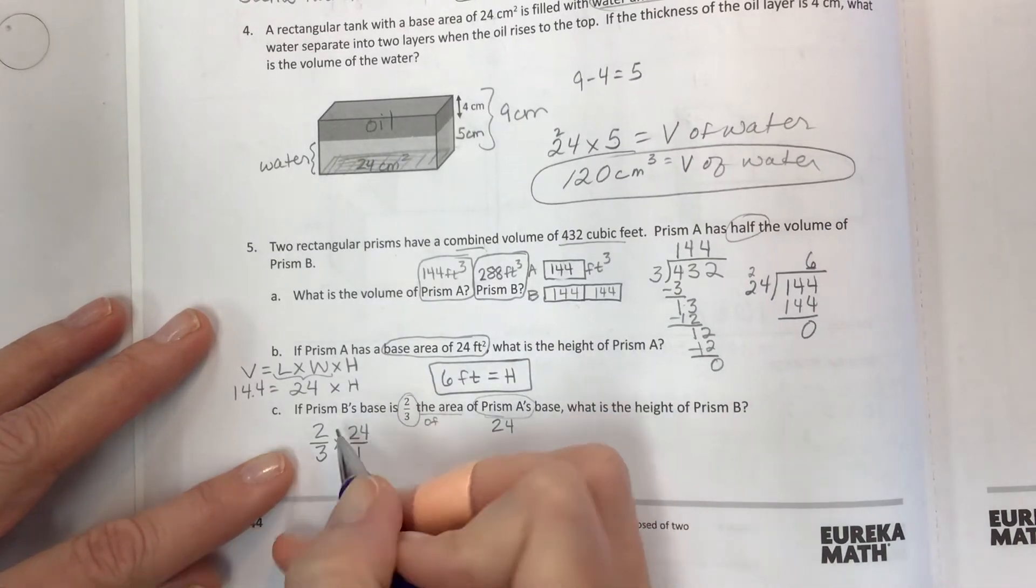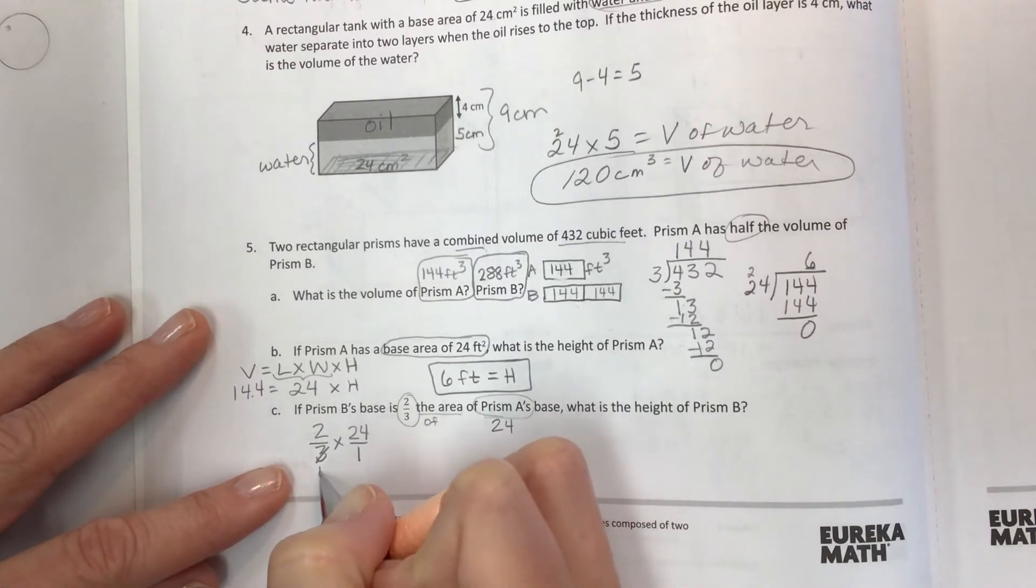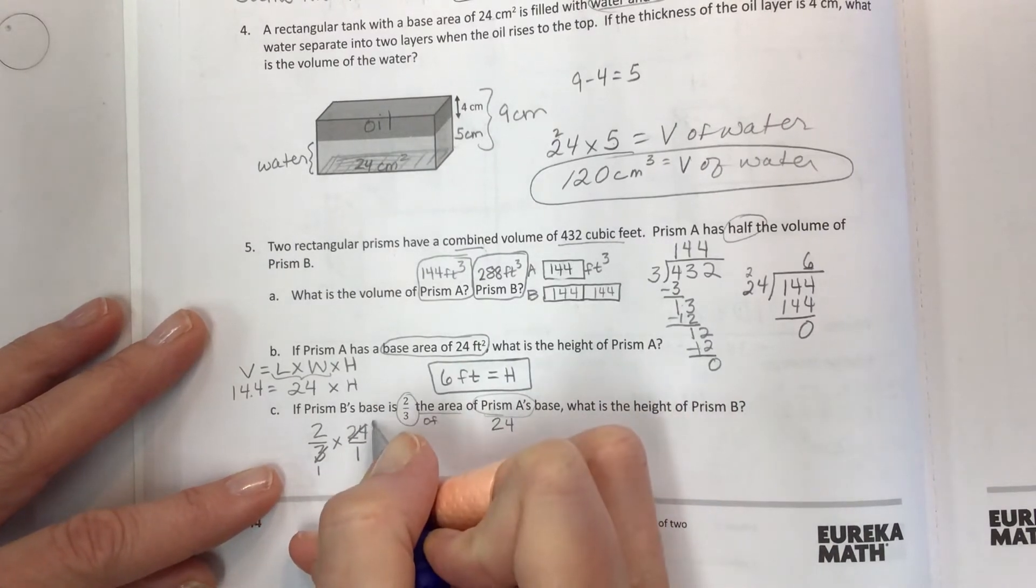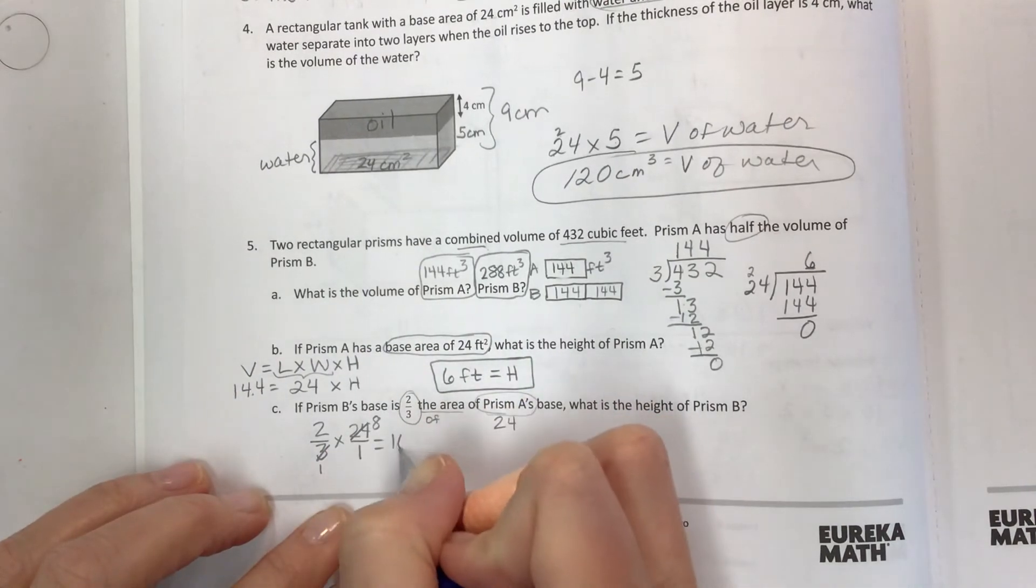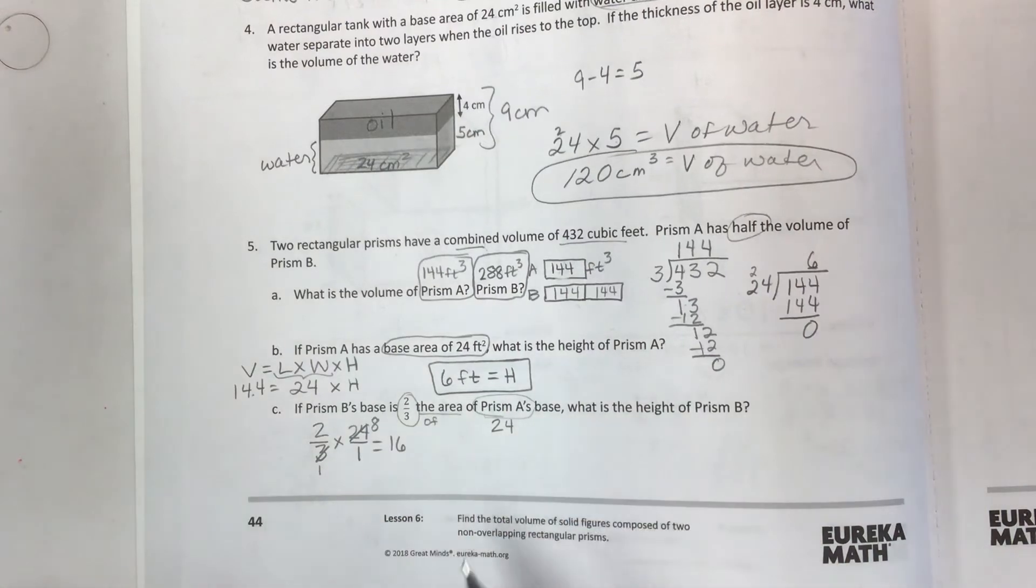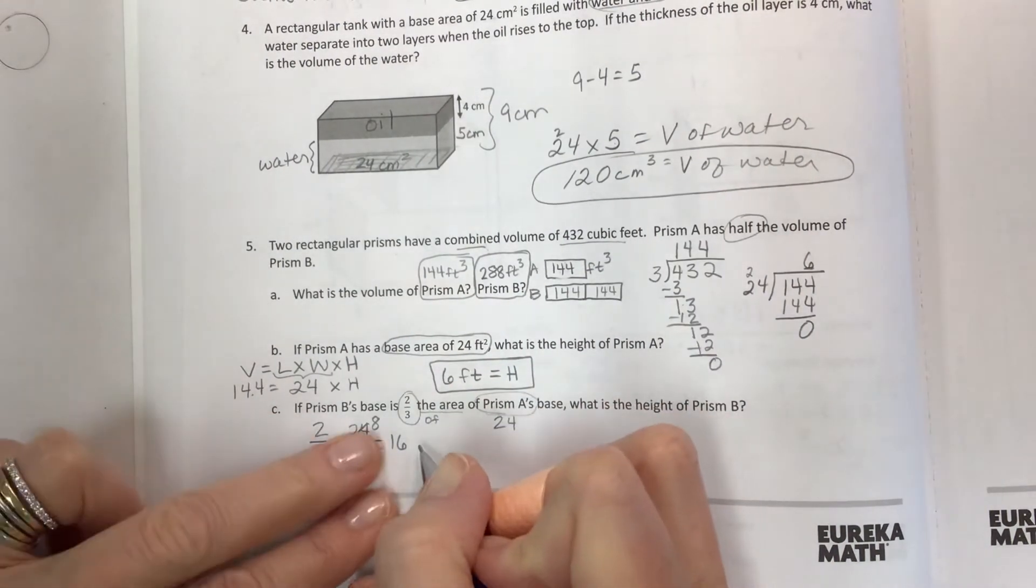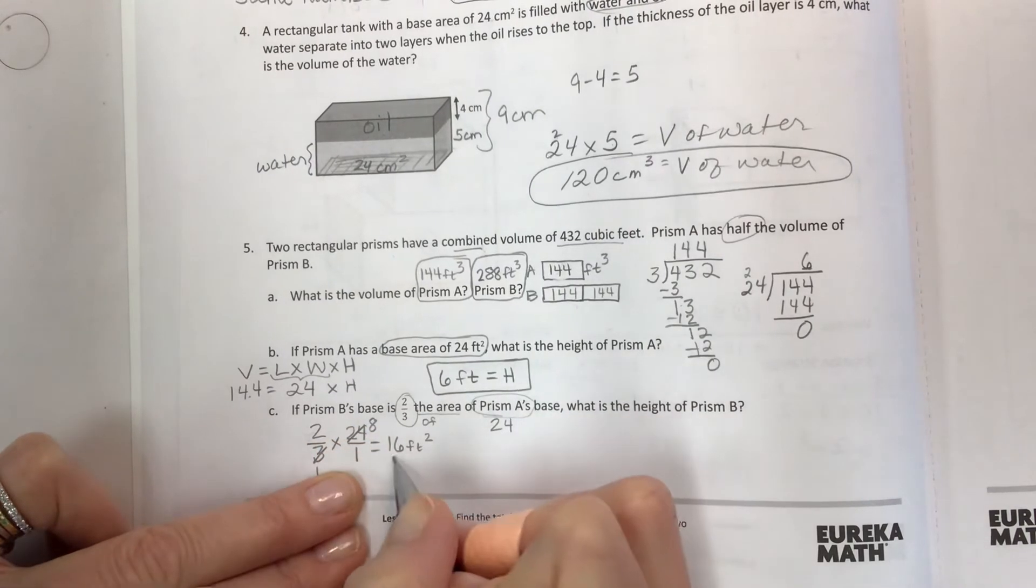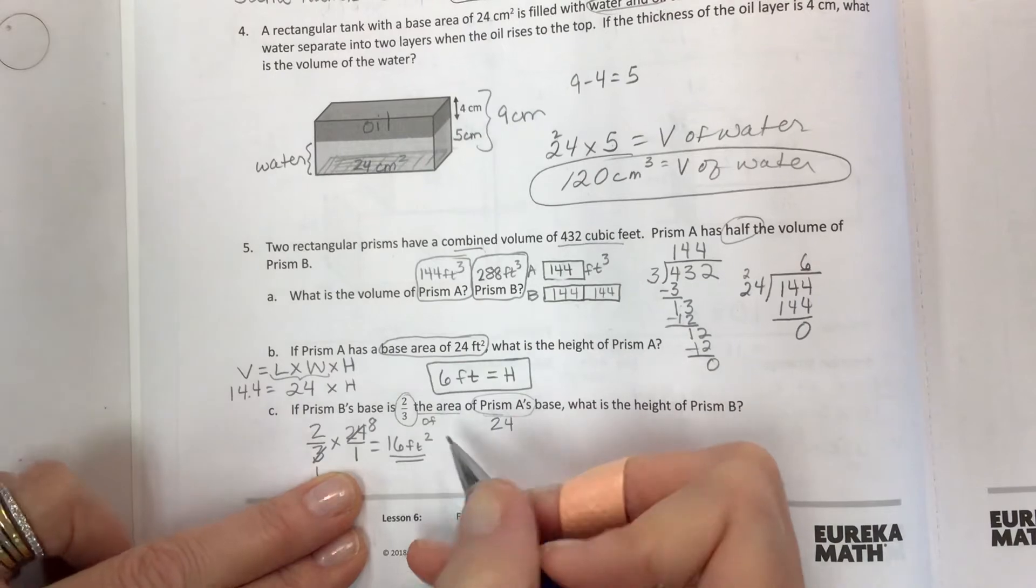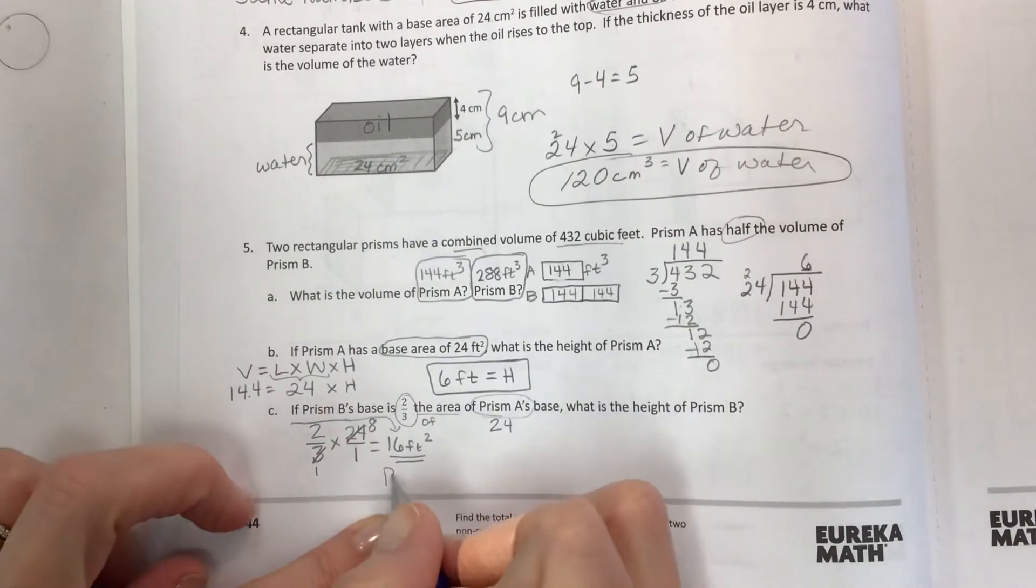So prism B's base area is two-thirds of 24 which can be easily solved if you know how to cross cancel. If you don't you would get 48 and divide by 3, but it's easier. I know that 3 goes into 24 eight times, and so now when I multiply I get 16 over 1 which is 16. So prism B's base area, and again if it's area it's going to be feet squared, that's prism B's base area.